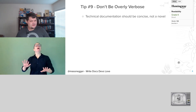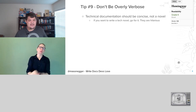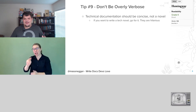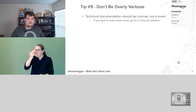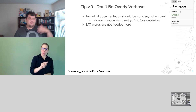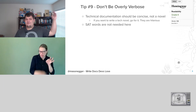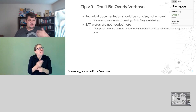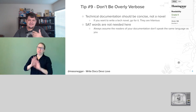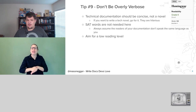Tip number nine: don't be overly verbose. Technical documentation should be concise, not a novel. SAT words are not needed here — upper level, college level reading level words do not need to be here. Always assume that the reader of your documentation doesn't speak the same language as you natively — that the language you are writing in is not their primary language. This will allow you to aim for a lower reading level.